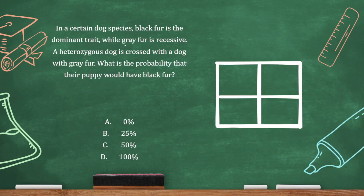In a certain dog species, black fur is the dominant trait while gray fur is recessive. A heterozygous dog is crossed with a dog with gray fur. What is the probability that their puppy would have black fur? Let's set up the Punnett square. Heterozygous means the alleles are different, so we'll have one big B and one little b.